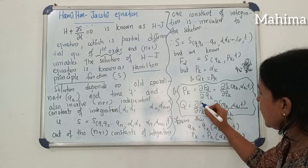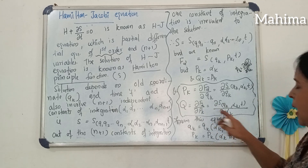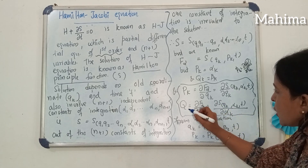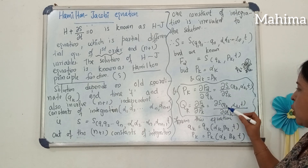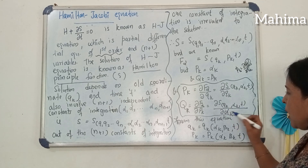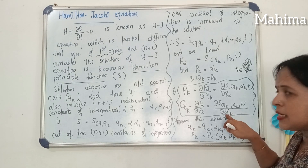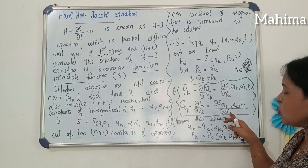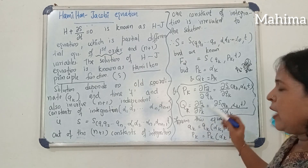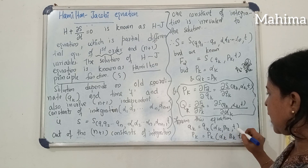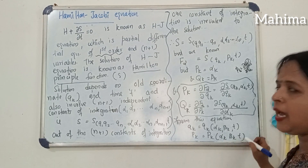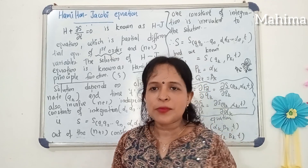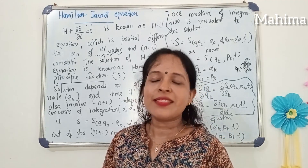And Qk is equal to del F2 by del Pk, substituting S for F2. Therefore Qk equals del S (as a function of qk, alpha k and t) divided by del alpha k, since Pk is alpha k. From these equations, Qk is a function of alpha k, beta k and t, and Pk is a function of alpha k, beta k and t. That's all about the Hamilton-Jacobi equation from classical mechanics. Thank you for watching.